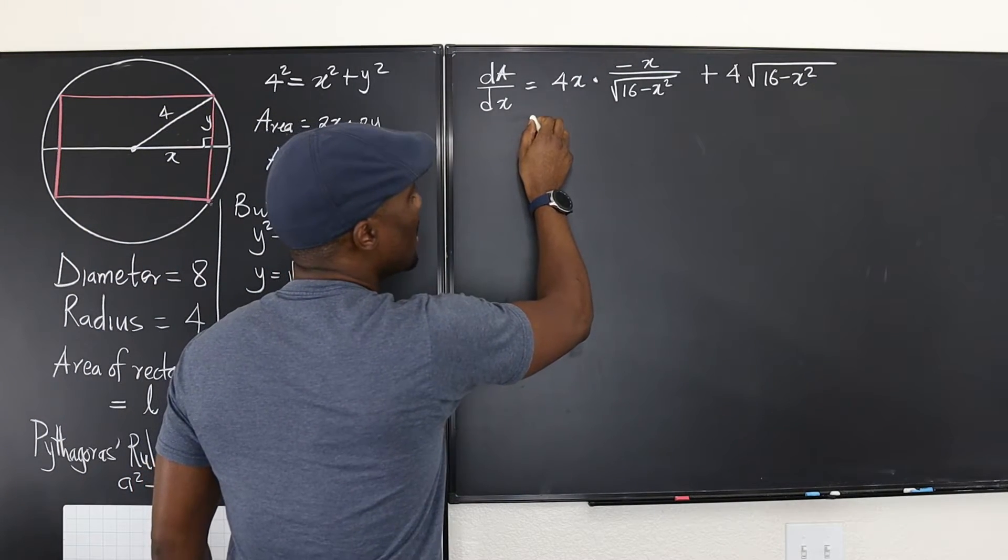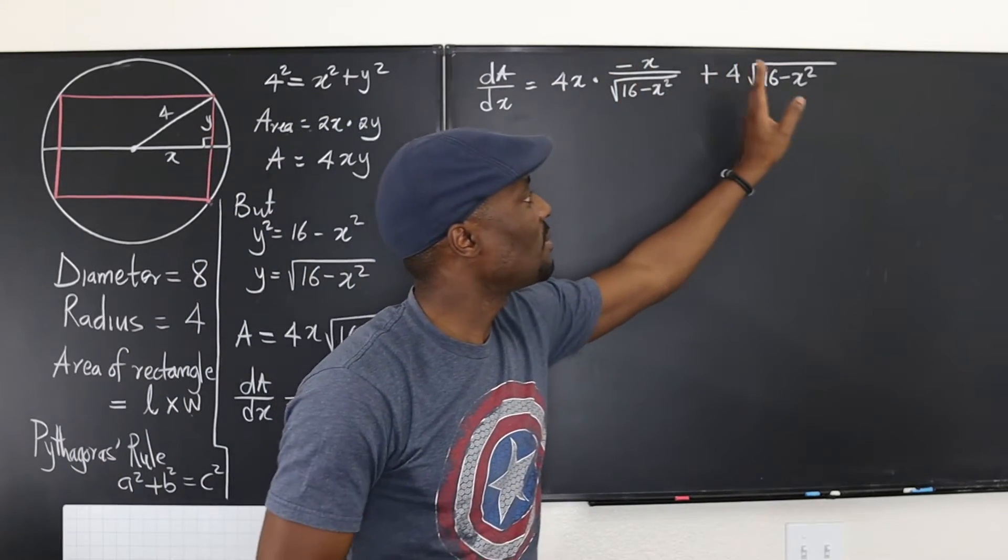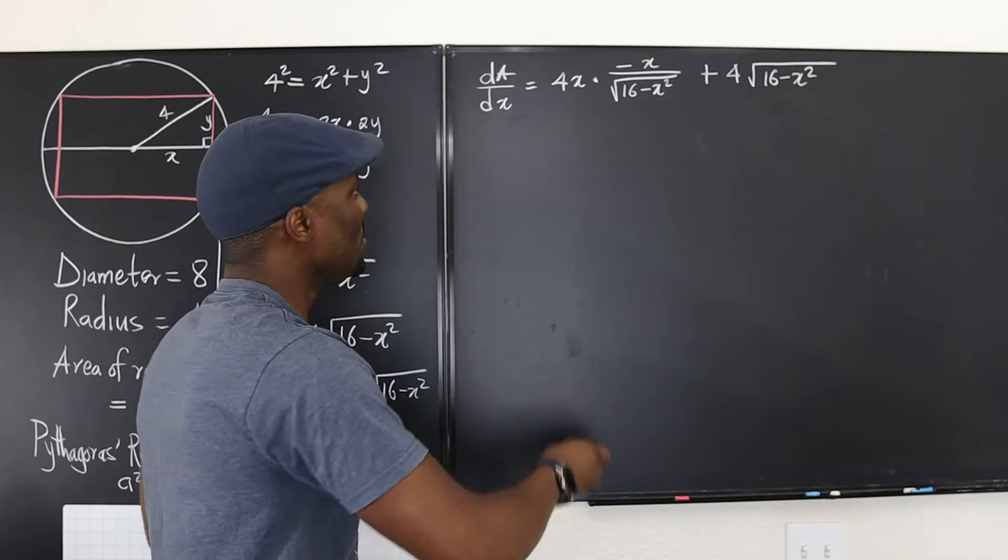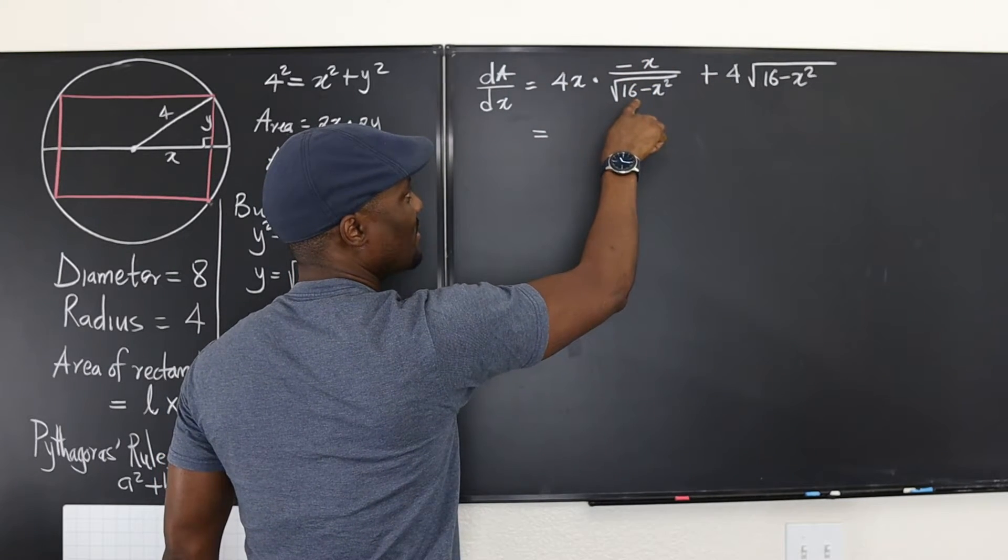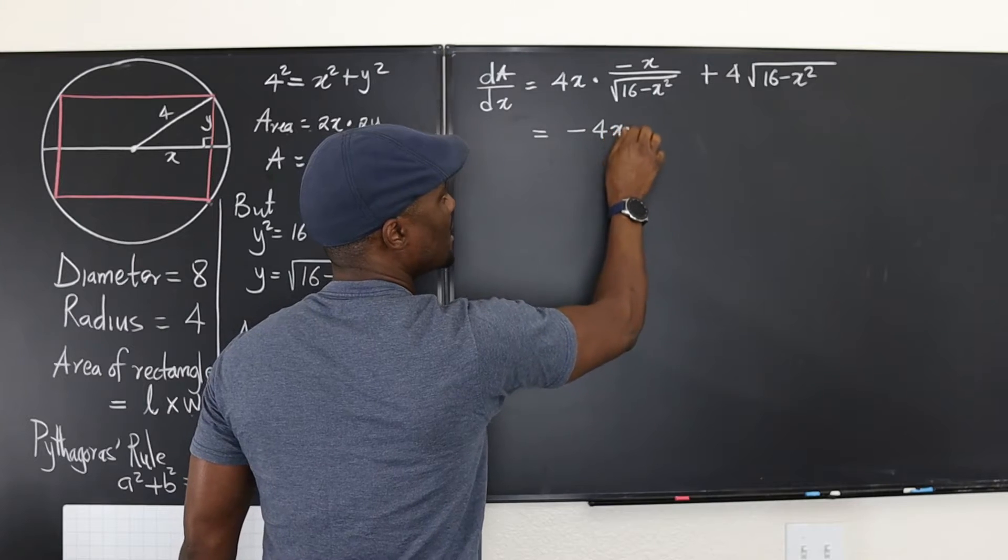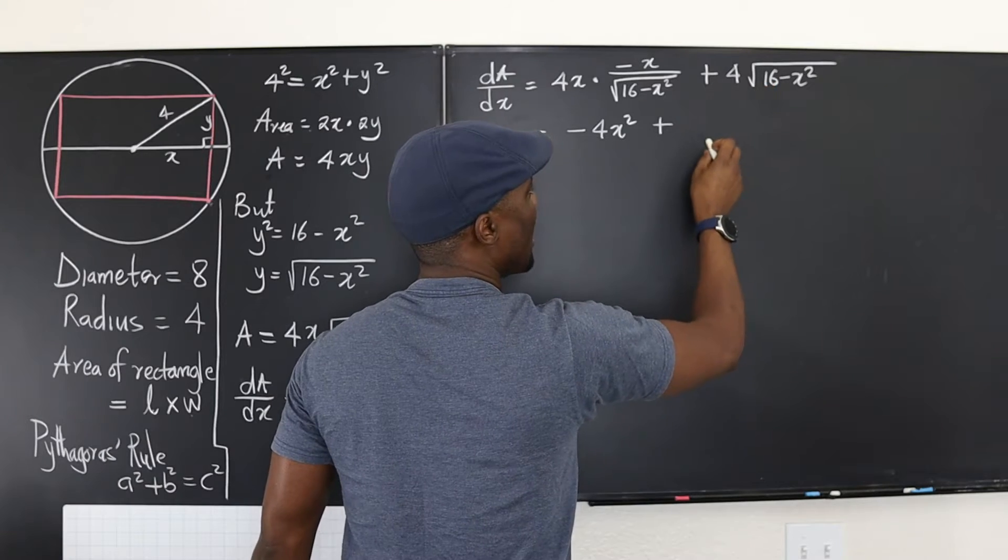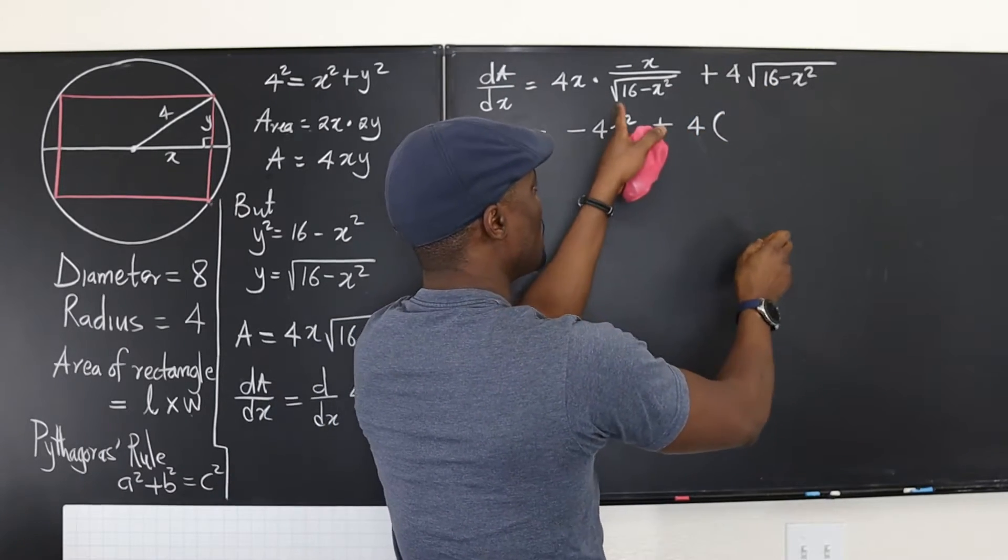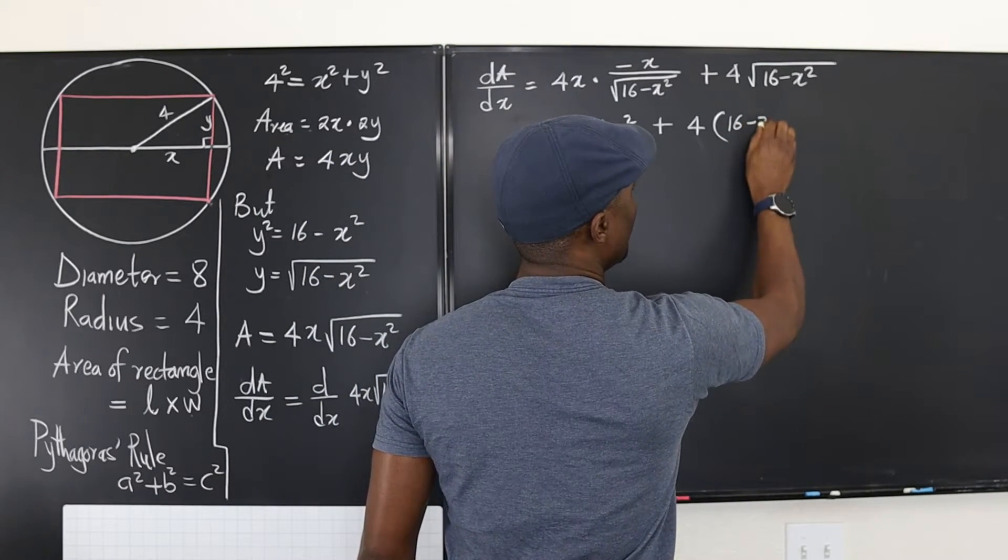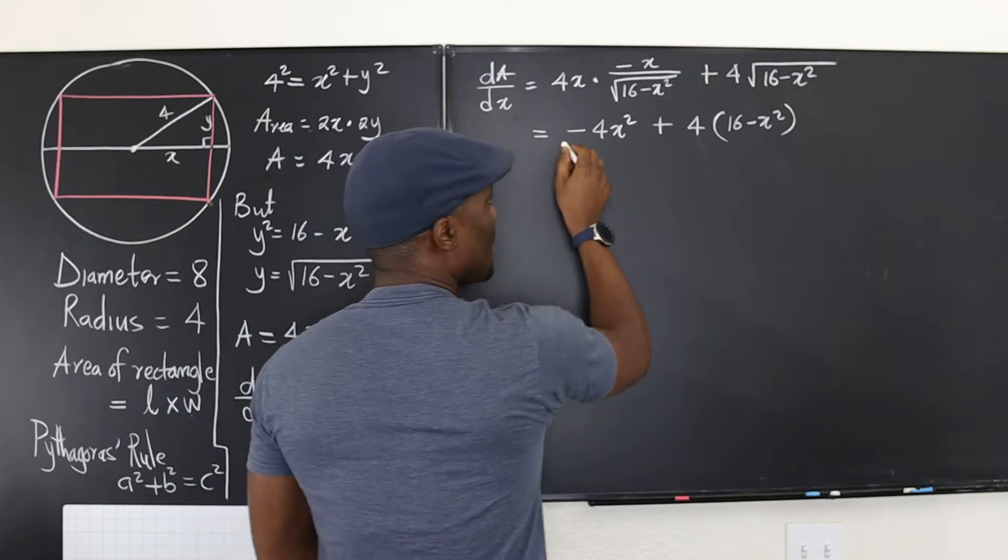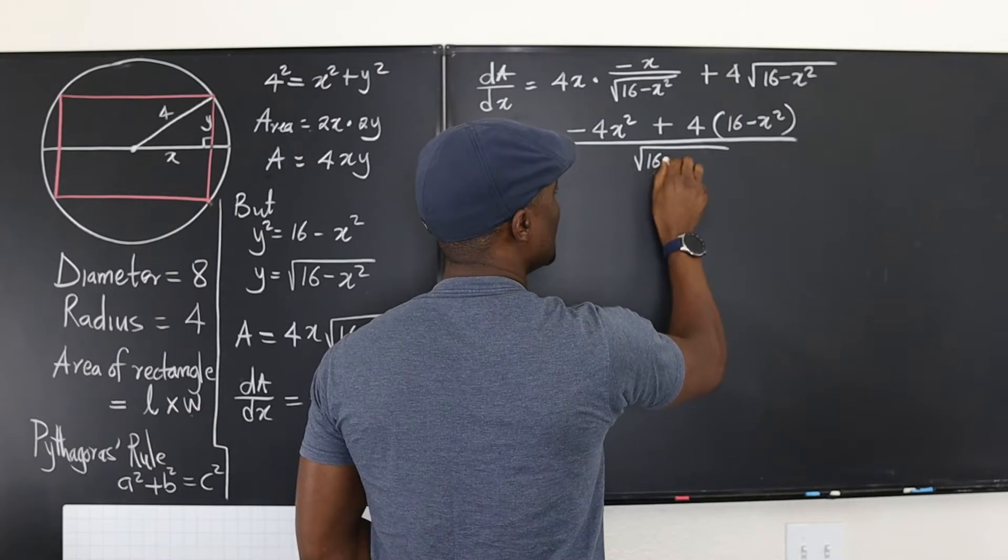So the second part of it is we add, remember the rule? You keep the first, differentiate the second, then plus. You differentiate the first, keep the second. If I differentiate 4x, what do I get? 4 multiplied by the second, which is just square root of 16 minus x squared. Let's do some simplification.